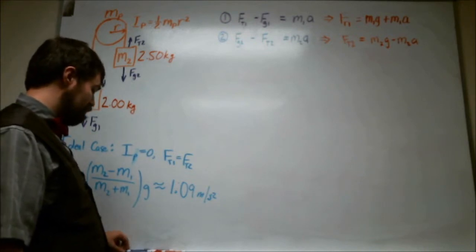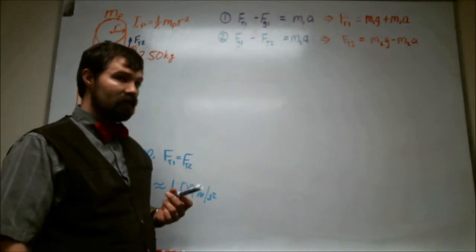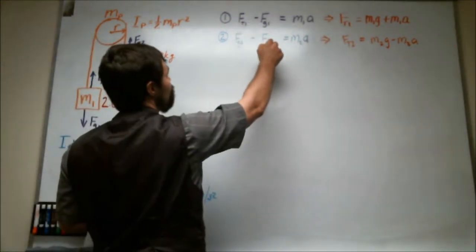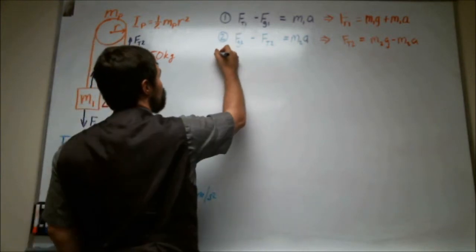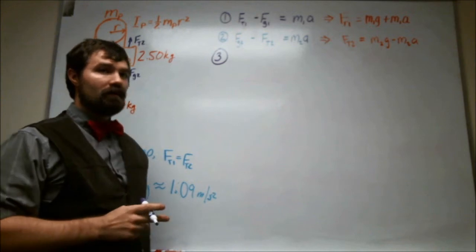If the two tensions are not treated as equal, then we actually need a third equation because we have three unknowns. So we need an equation number three to solve for those unknowns.